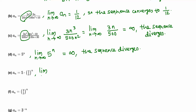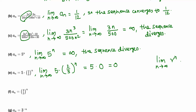Let's find the limit as n goes to infinity of 5 times (2/3) raised to n. The 5 can be pulled outside. Now we take the limit of (2/3)^n. Since 2/3 is less than 1, when n goes to infinity this limit goes to 0. So 5 times 0 is 0. In general, the limit of r^n is 0 if the absolute value of r is less than 1.